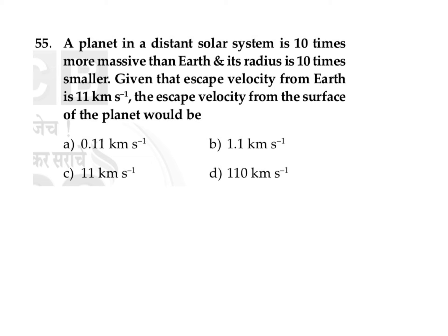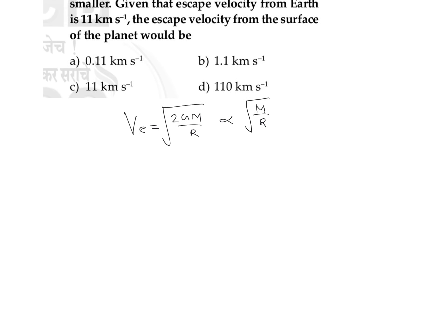We know the equation for escape velocity: it is equal to the square root of 2GM divided by R. This means escape velocity is directly proportional to the square root of M and inversely proportional to the square root of R, or directly proportional to the square root of M divided by R.